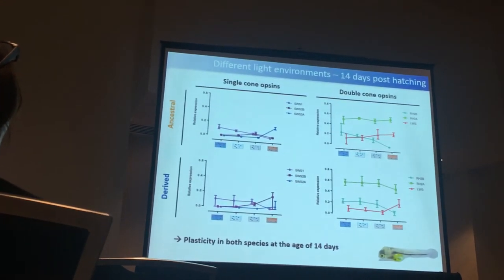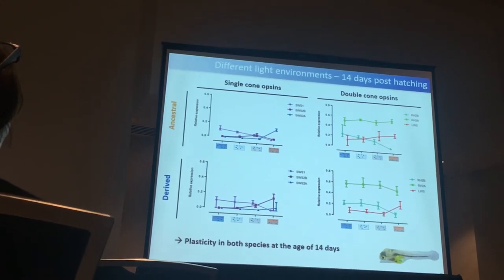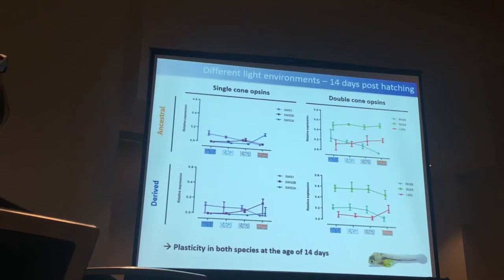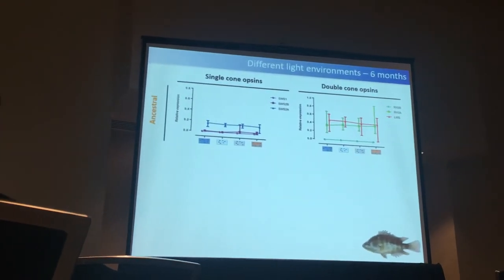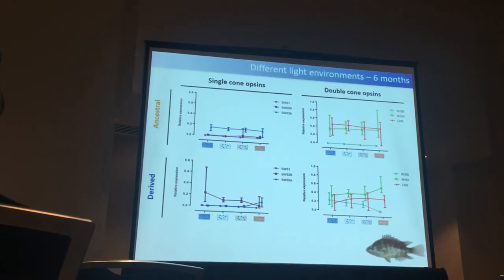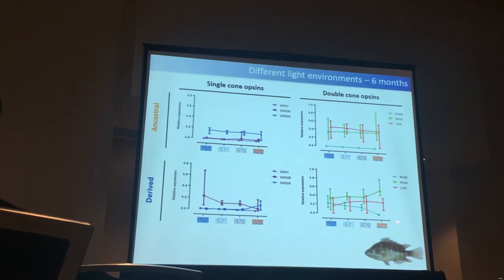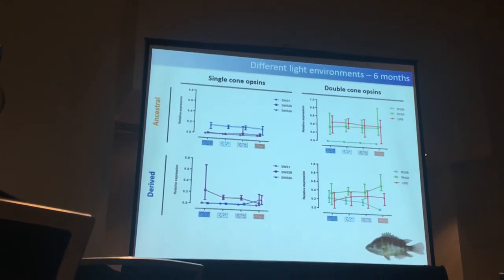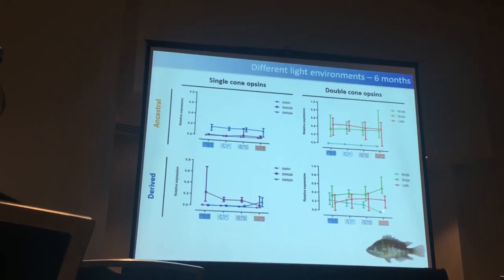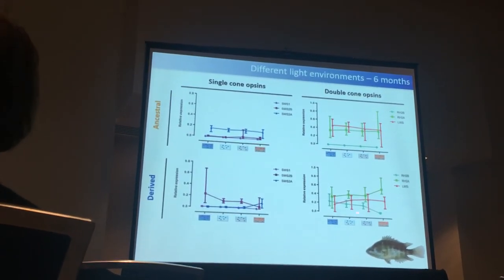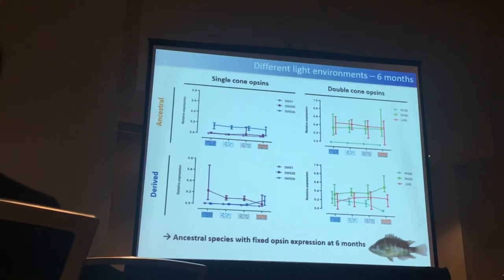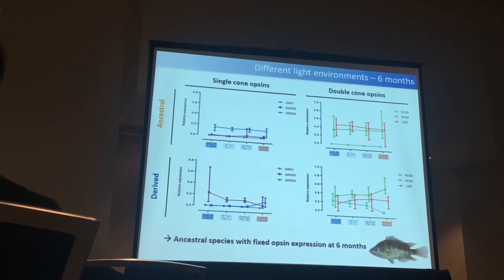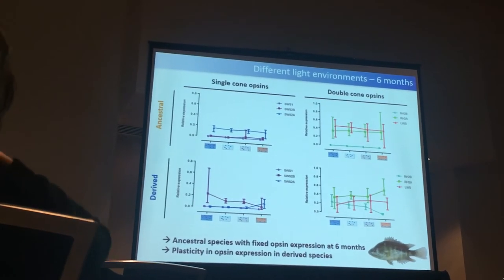Now we looked at what happens at older age. We took fish that were six months old, put them in those light treatments for two weeks, and measured opsin expression again. In the ancestral species, we see a totally different picture — opsin expression is not affected at all by any of the light treatments. But in the derived species, we still find plasticity: most strikingly, the red treatment is the only one where SWS2A is expressed, and RH2B is not expressed in the red treatment but is in all others. So opsin expression is fixed at six months in the ancestral species, but plasticity is maintained in the derived species.